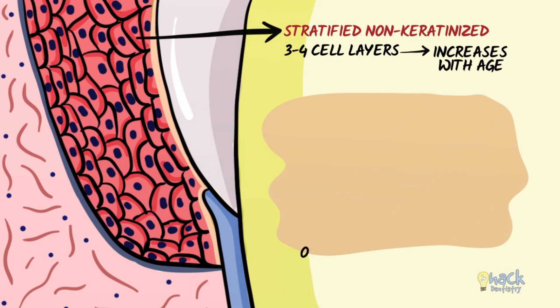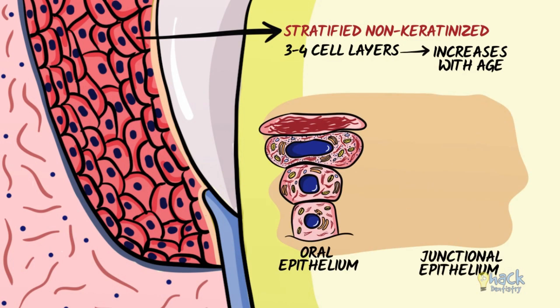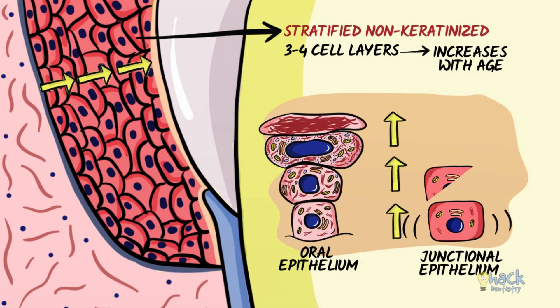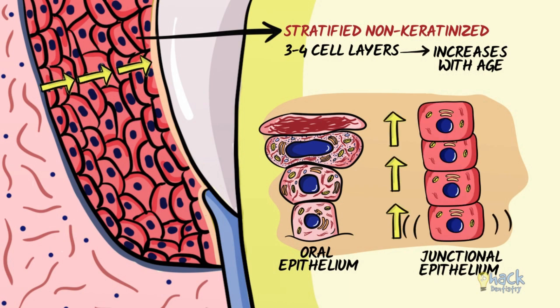Like the rest of the epithelium, the junctional epithelium keeps proliferating in the deep layers and moves up to replace cells that are shed. The cells of the junctional epithelium have a high turnover, with cells continuously being regenerated every 5–6 days.